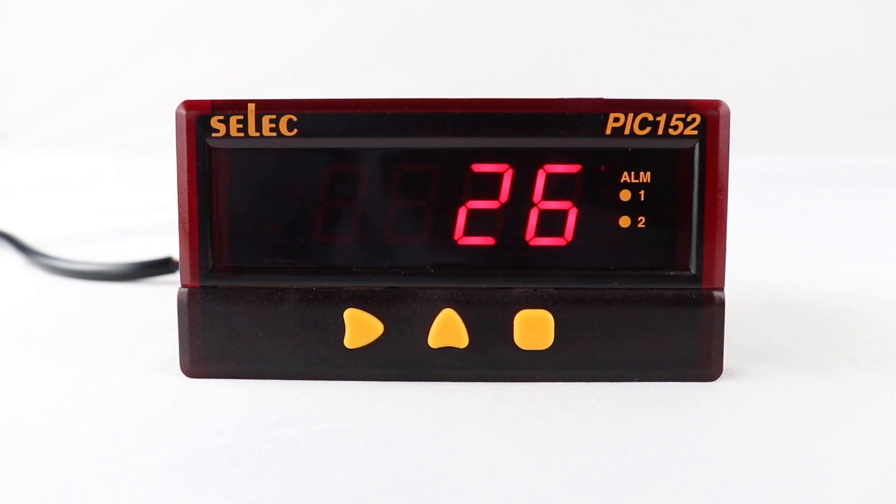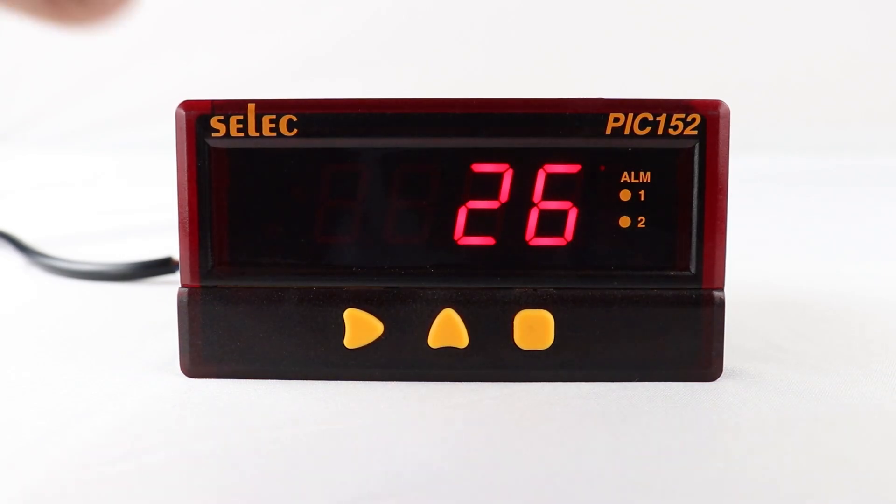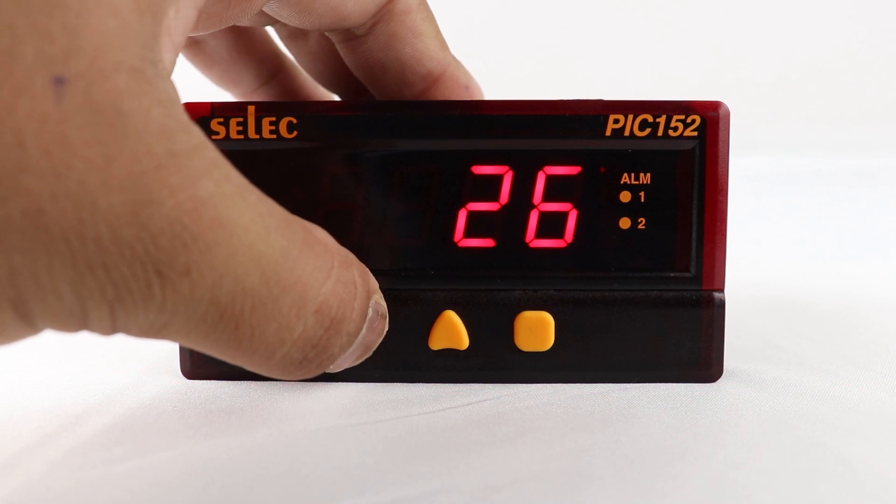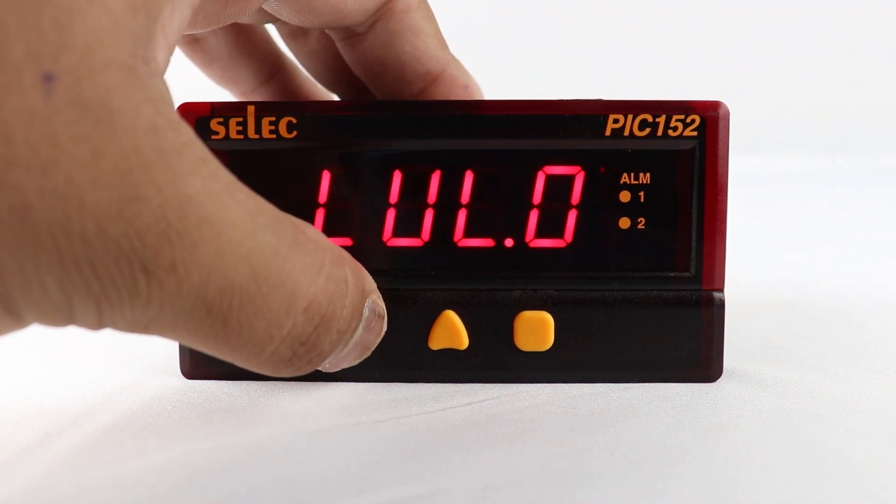Programming. Long press right arrow key for 3 seconds to enter configuration level 0.